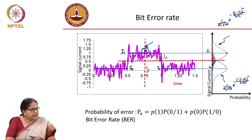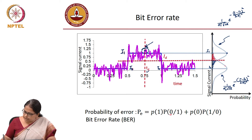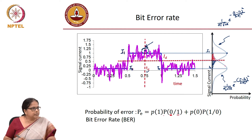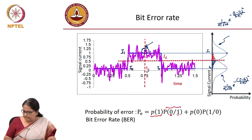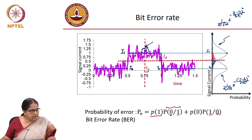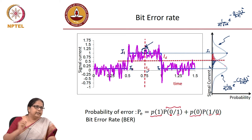We define the probability of error as: probability of detection of a 0 given that a 1 bit is transmitted, multiplied by probability of finding 1 — this is your conditional probability — plus probability of detecting a 1 given that you transmitted a 0, multiplied by probability of finding a 0, i.e., probability of sending a 0.